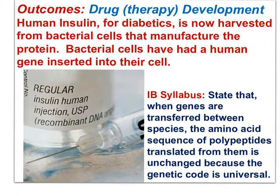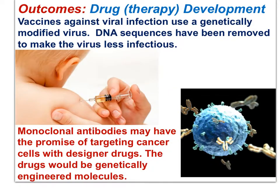The Human Genome Project has stimulated the proliferation of genetically-based drugs and therapies, such as the manufacture of bacteria that transcribe and translate the human insulin gene as if it were their own. This works because when genes are transferred between species, the amino acid sequence of translated polypeptides is unchanged, as the genetic code is universal.